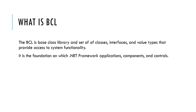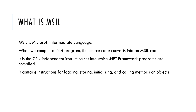What is the BCL? The Base Class Library is a set of classes, interfaces, and value types that provide access to system functionality. It is the foundation on which .NET Framework applications, components, and controls are developed. What is MSIL? MSIL is the Microsoft Intermediate Language. When we compile a .NET program, the source code is first converted to MSIL code by the language compiler. It is a CPU-independent instruction set to which .NET Framework programs are compiled, and it contains instructions for loading, storing, initializing, and calling methods on objects.